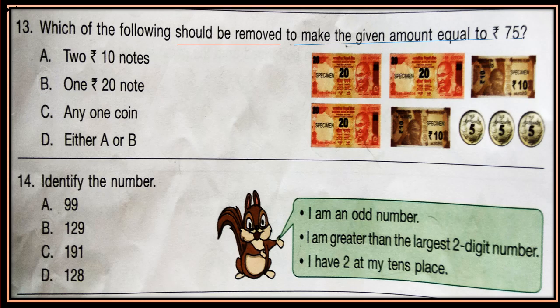Question 13. Which of the following should be removed to make the given amount equal to Rs 75? Now some notes and coins are given. You have to make the amount equal to 75 and remove the extra notes. Now choose from options A, B, C, D which is the correct option.